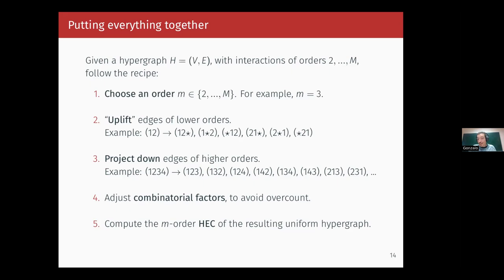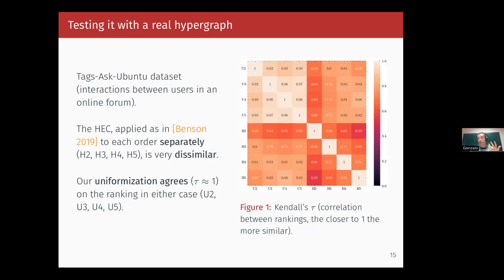Now I only have to show you why this is relevant. What we want is to have the same centrality no matter how you look at it — no matter which order you choose, you should see the same thing. We checked this with the Tags-as-Kubuntu dataset, a hypergraph constructed from interactions in an online forum. If you compute the Kendall Tau ranking comparison, the closer to one it is, the more similar the rankings or the centralities are. We see that no matter how you look at it with our method, you are very close to one — so we always have the same ranking of the nodes. With the original approach of just looking at two, three, or four interactions separately, you get completely dissimilar rankings. I think it's a very nice result.